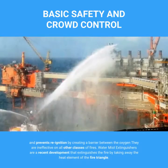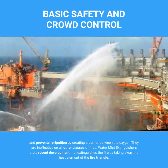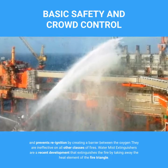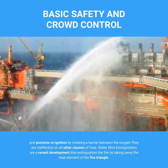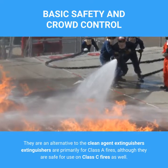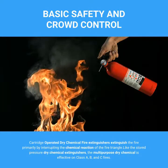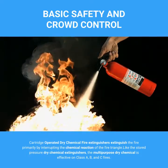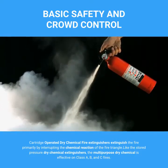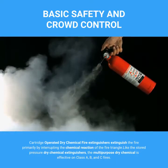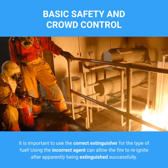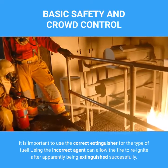Wet chemical is a new agent that prevents re-ignition by creating a barrier between the oxygen; it is ineffective on all other classes of fires. Water mist extinguishers extinguish fire by taking away the heat element and are an alternative to clean agent extinguishers, primarily for Class A fires but safe for use on Class C fires as well. Cartridge operated dry chemical extinguishers extinguish fire primarily by interrupting the chemical chain reaction; the multi-purpose dry chemical is effective on Class A, B, and C fires. It is important to use the correct extinguisher for the type of fuel, as using the incorrect agent can allow the fire to reignite after apparently being extinguished successfully.